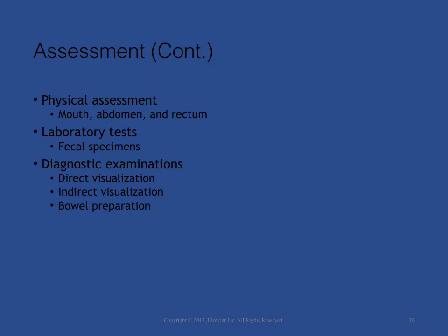Hemoglobin and hematocrit may be done to determine if anemia from GI bleeding is present. Other laboratory tests that may be ordered include liver function tests, serum amylase, and serum lipase, which are used to assess for hepatobiliary diseases and pancreatitis. A common stool test is the fecal occult blood test, which measures microscopic amounts of blood in the feces. Direct visualization tests include endoscopy. Indirect visualization tests include anorectal manometry, x-rays with and without contrast medium, ultrasound, CT scan, colonic transit study, and MRI. Some diagnostic tests require bowel preparation.